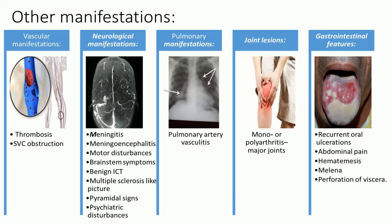Pulmonary manifestations: pulmonary artery vasculitis presents with dyspnea, cough, chest pain, hemoptysis, and infiltrates on chest X-rays.